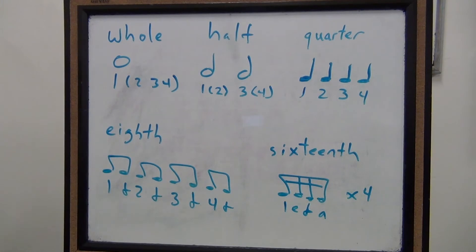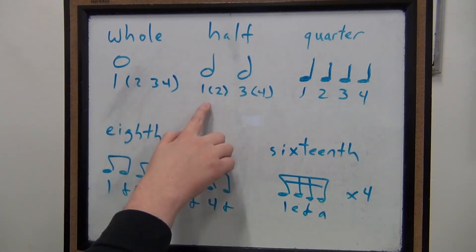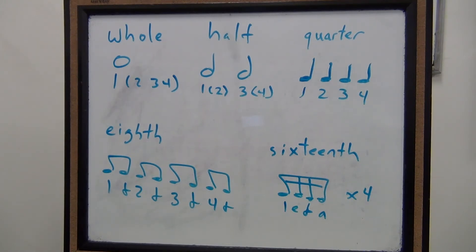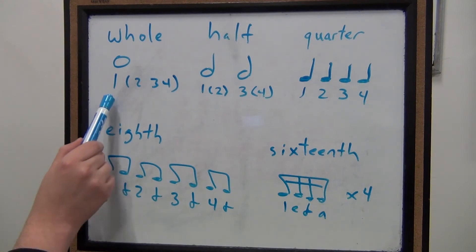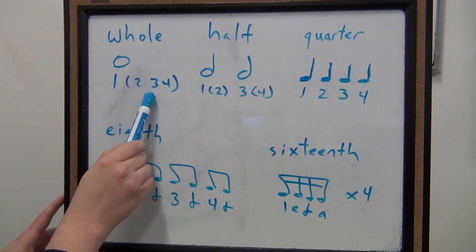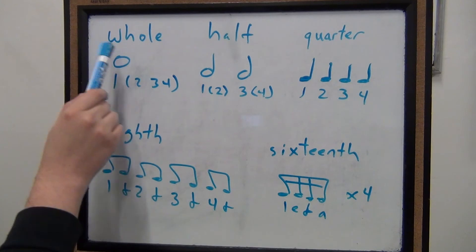So let's look at that all written out to understand it a little bit better. Here are our rhythms: we have our whole note, our half note, our quarter note, our eighth notes, and our sixteenth notes. Let's double check how to count all of these and hear what they sound like in a few contexts. With the metronome, for a whole note, we're going to think 'one' over the whole thing — we see this little whole note.